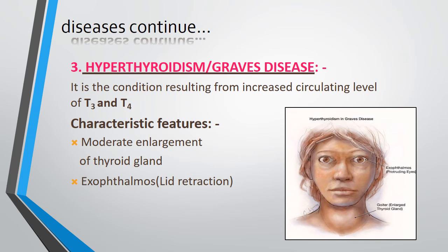The third is hyperthyroidism, also called Graves' disease, with increased T3 and T4 levels in the blood. Features include moderate enlargement of the thyroid gland, exophthalmos, and lid retraction. Exophthalmos means protruding eyes, as you can see in the figure.